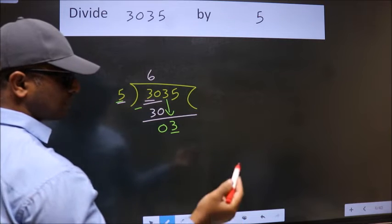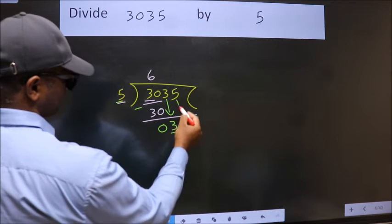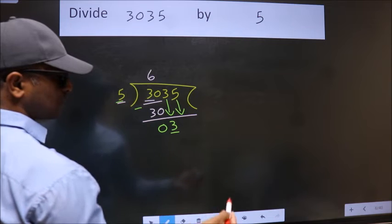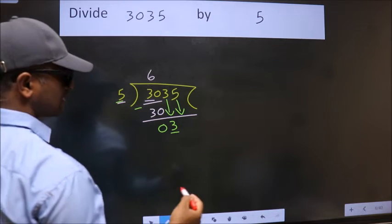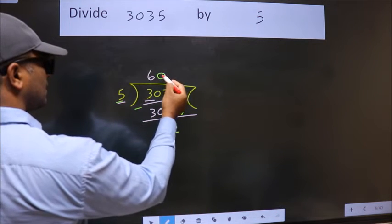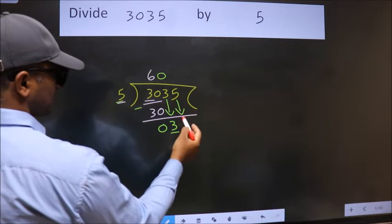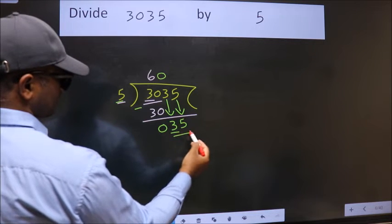So we should bring down the second number. And the rule to bring down second number is, put 0 here. Then only we can bring down this number. So 35.